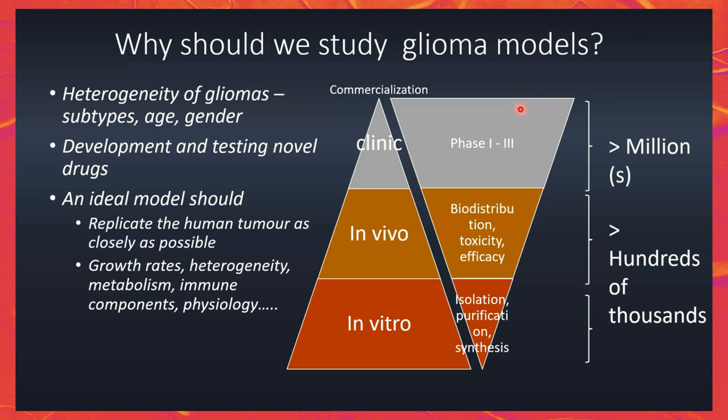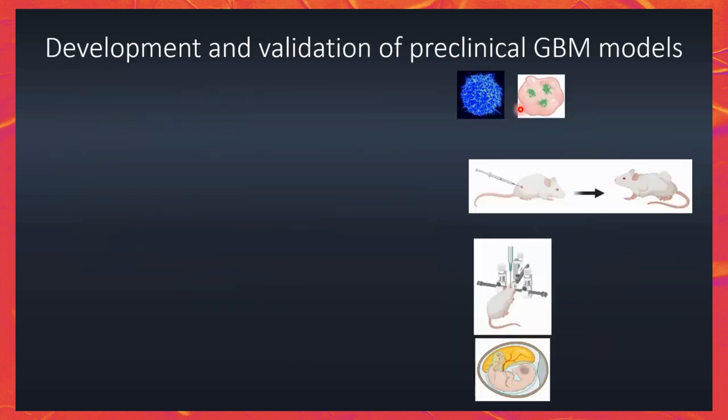The ideal model would be the one that replicates the human tumor as closely as possible — in terms of growth rates, heterogeneity, metabolism, immune response, and so on. The list keeps going. Obviously you cannot have a silver bullet for everything, so you need to have different models.